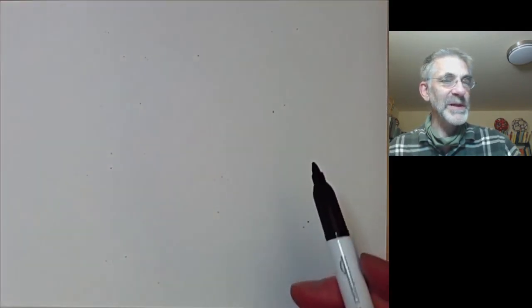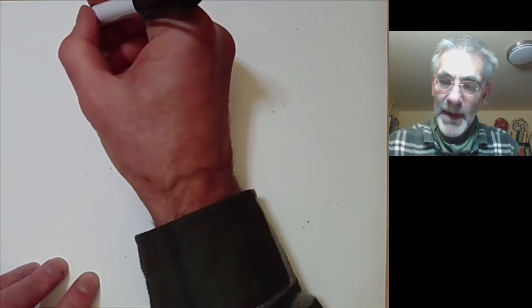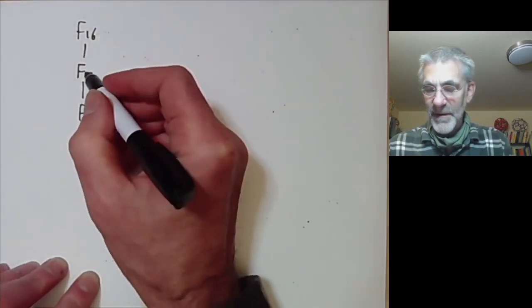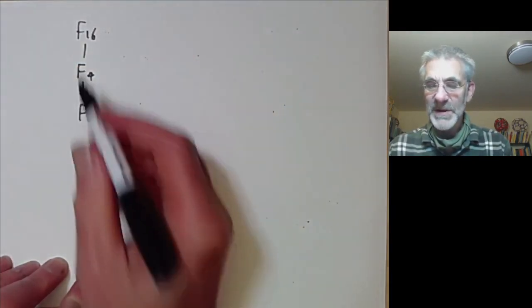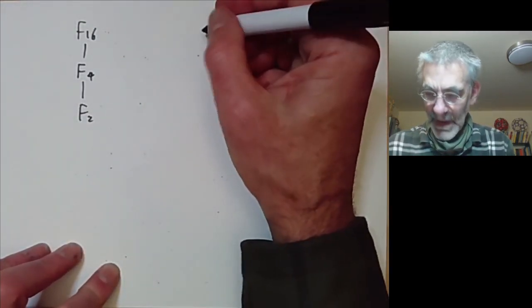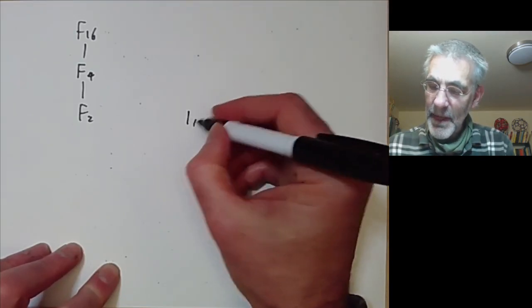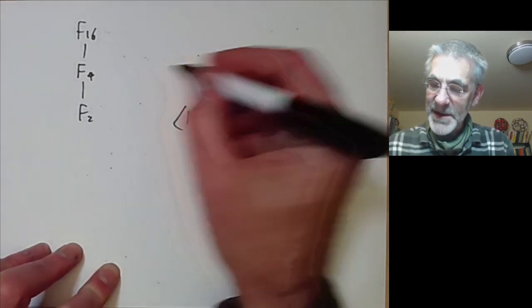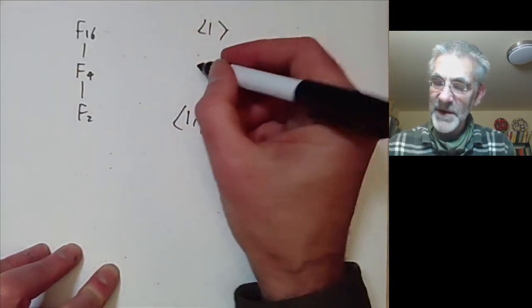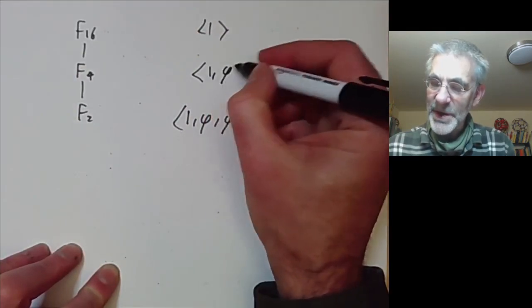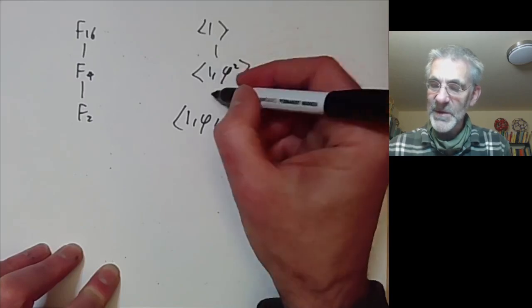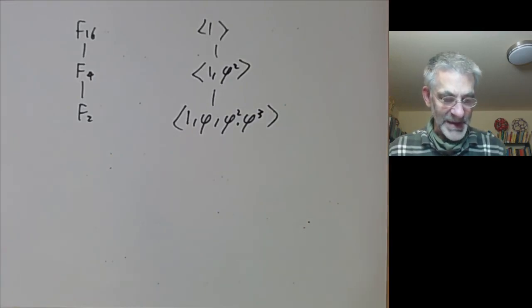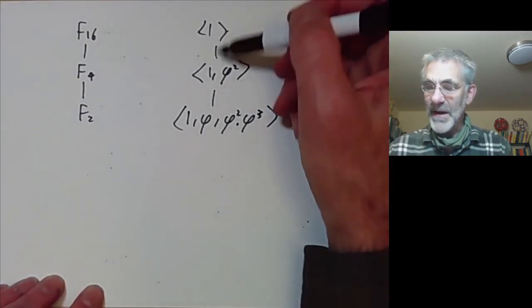Let's draw a picture of the subfields and the corresponding subgroups. The subfields of F₁₆ over F₂ are straightforward: there is one intermediate subfield, F₄. The full Galois group contains 1, φ, φ², φ³, the trivial subgroup corresponds to the full field F₁₆, and there is one subgroup of order 2, namely {1, φ²}, corresponding to F₄. All extensions here are normal and all subgroups are normal.